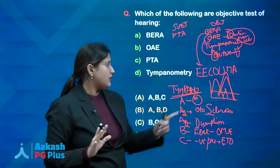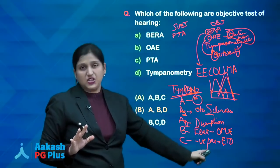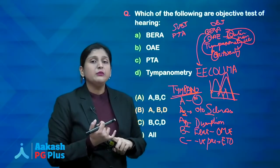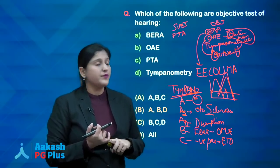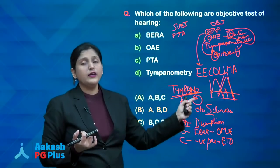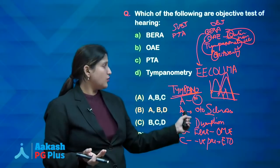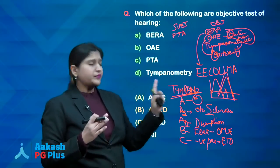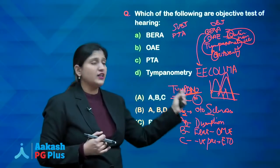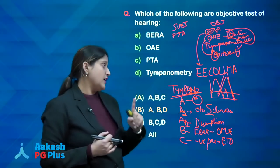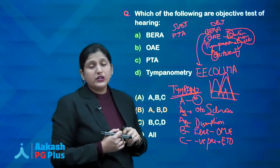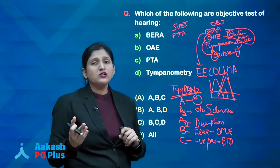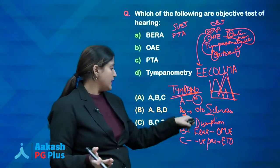If just the graph is given, you can analyse the condition. For otosclerosis, the question is often framed as: a young female developed hearing loss after pregnancy — what is the tympanometry result? Answer: AS. If a patient had an accident and then developed hearing loss, the tympanometry result would be AD — disruption of the ossicular chain.